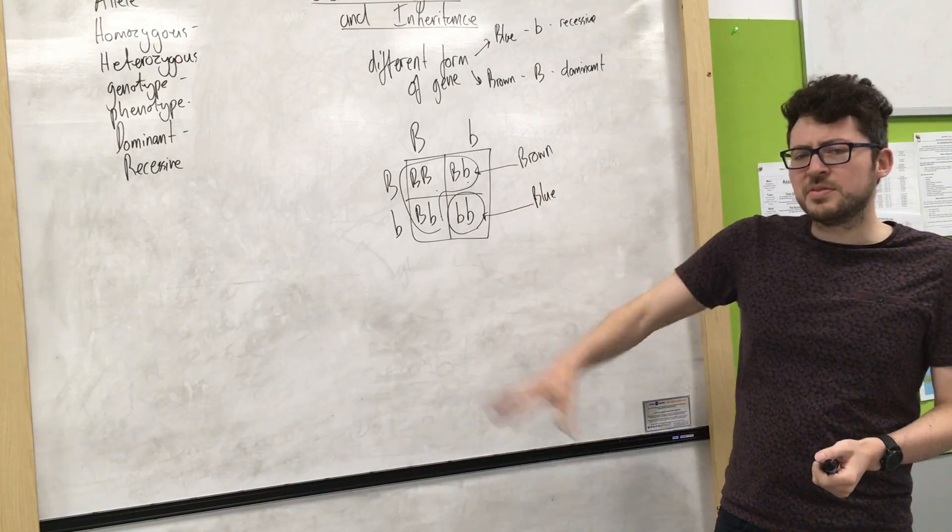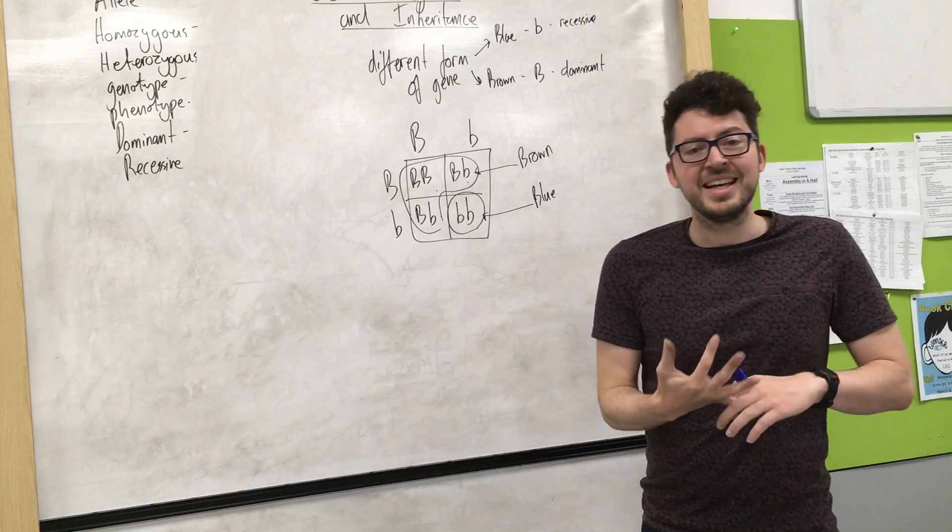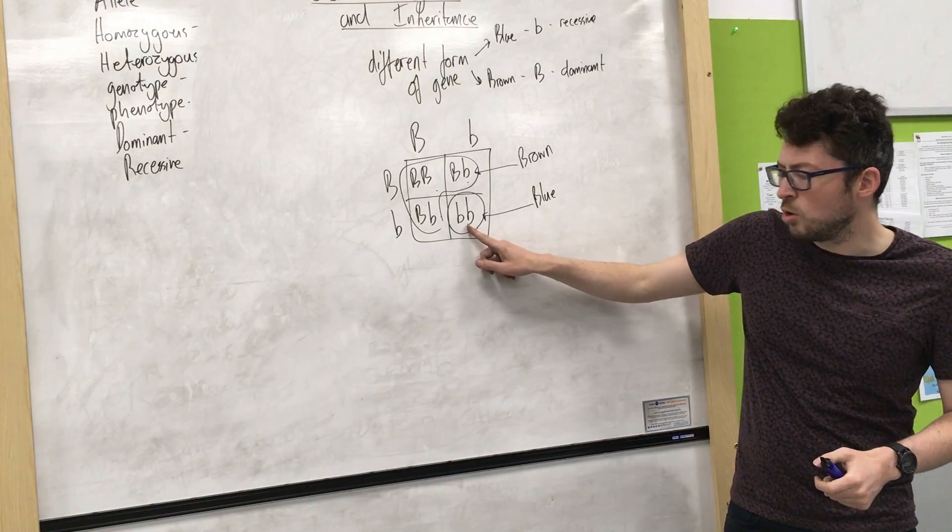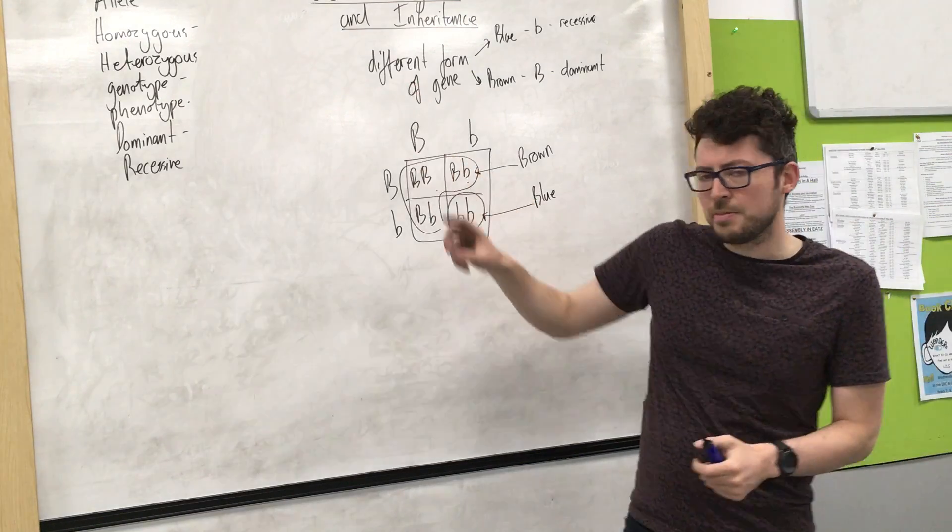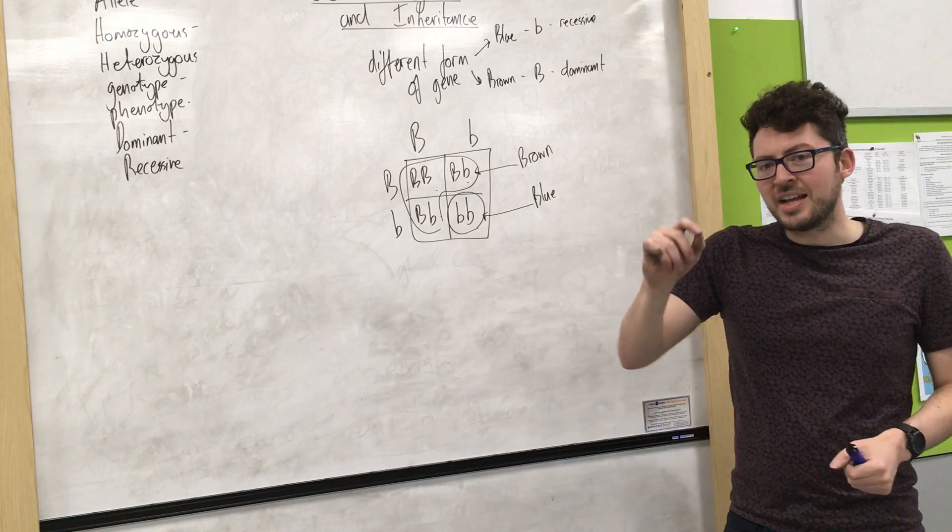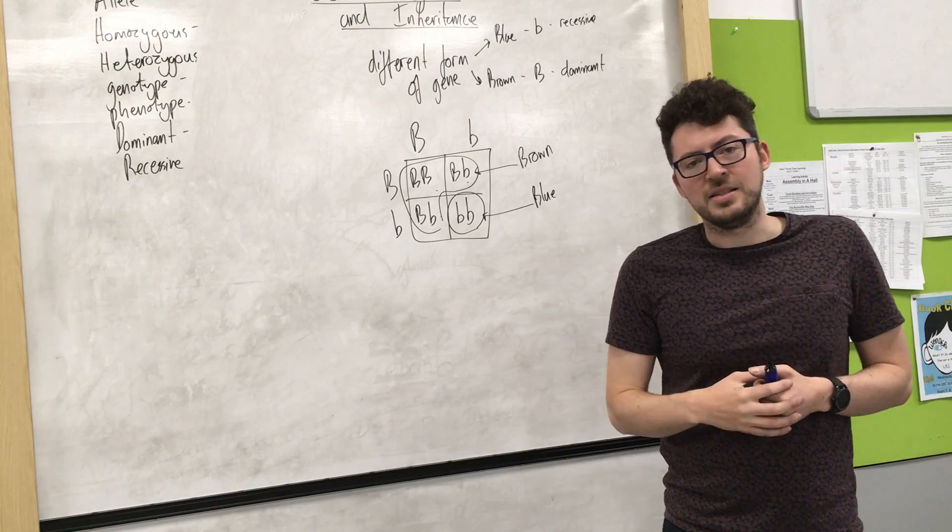Now building on to phenotype, all phenotype means is the physical feature you express. So if you're looking at me I must have two small b's. That's my genotype as in two blue eyed alleles. My phenotype would simply be having blue eyes.